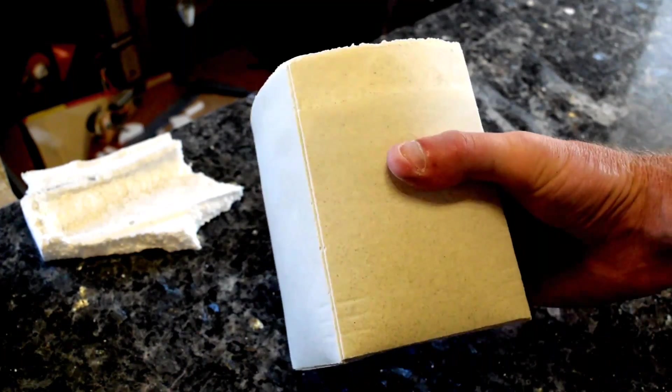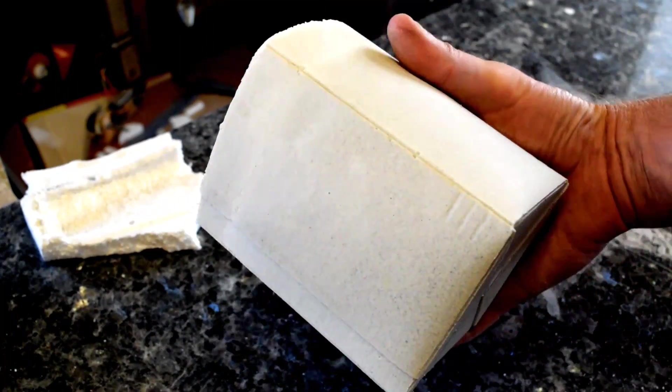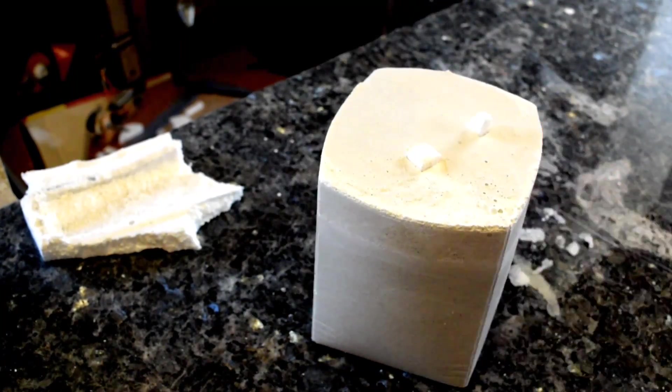Here's the mold after the plaster is all hardened, but there's still quite a lot of moisture within the plaster. And if we threw it in the forge like this for the burnout process it would crack like crazy.